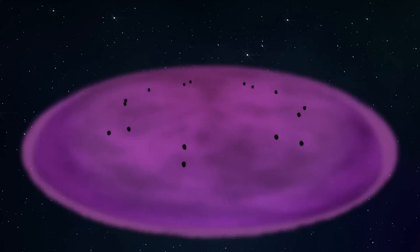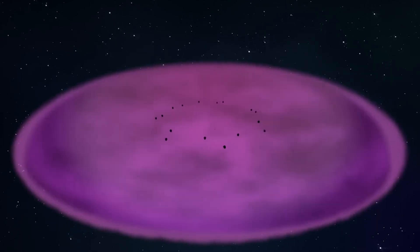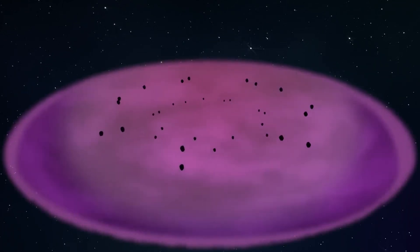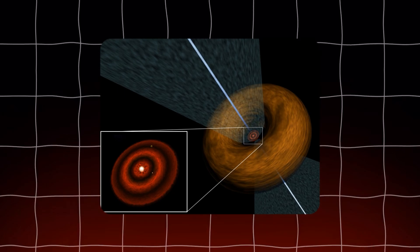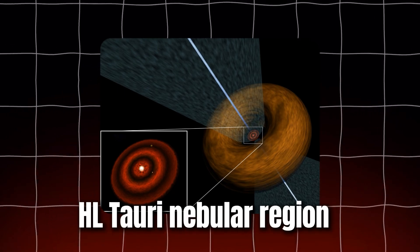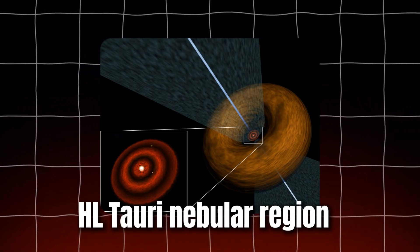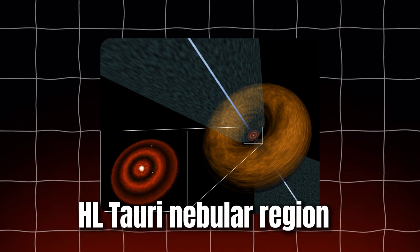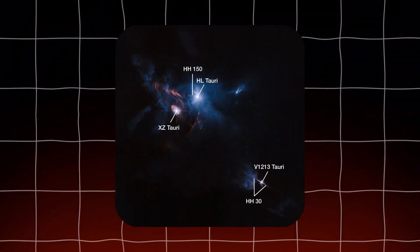These disks are not just theoretical constructs, they have been observed in various stages of development around young stars. For example, the young star HL Tauri, located about 450 light-years away, is surrounded by a protoplanetary disk where new planets are forming.